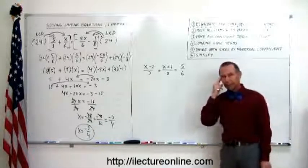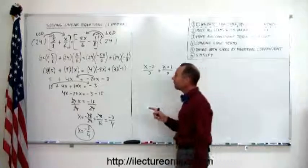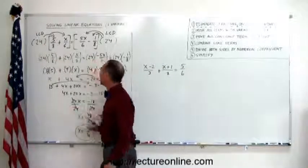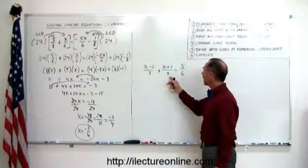How do we do that again? Remember, we have fractions, we look for the lowest common denominator. What is the lowest common denominator of 3, 8, and 6?